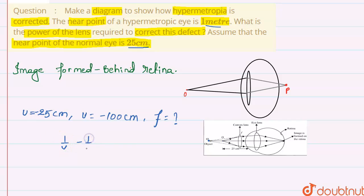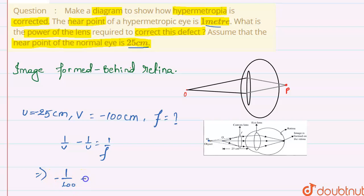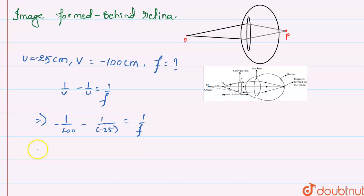By the lens formula, we know that 1/v minus 1/u equals 1/f. So substituting, v is minus 100 centimeters and u is minus 25 centimeters, giving us 1 upon minus 100 minus 1 upon minus 25 equals 1 upon f, the focal length of the convex lens used.